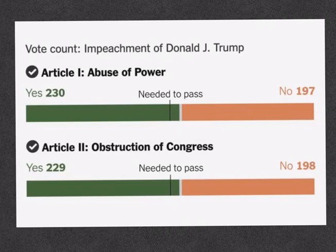Since we are clear with the procedure, let us now look at the charges against Donald Trump. In the US, these charges are formally called articles of impeachment — meaning formal charges against an individual. In the case of Trump, the House considered two articles of impeachment: one is abuse of power, and the second is obstruction of Congress.